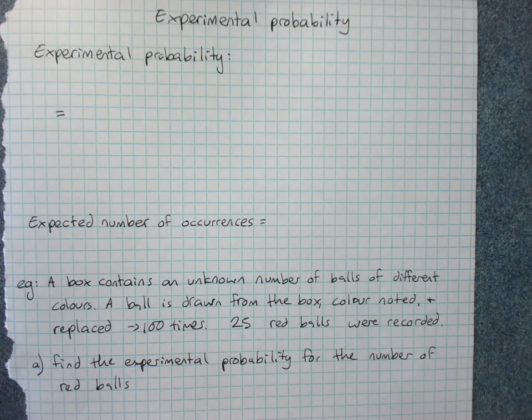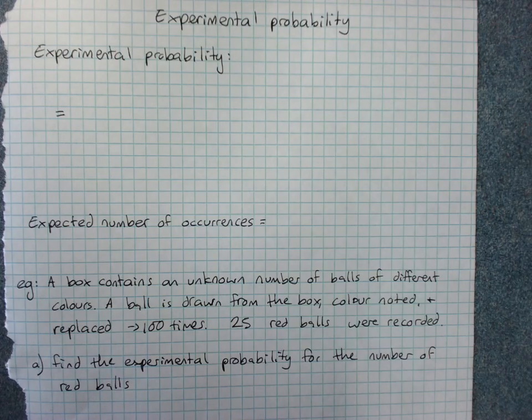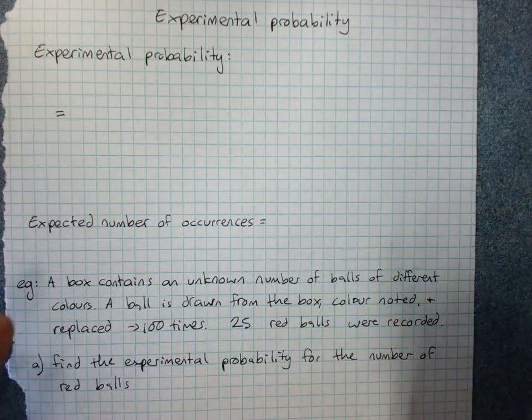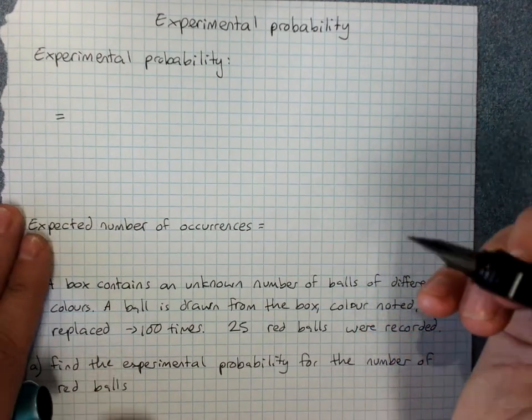If that's the case, then we'll usually do an experiment or a survey to get experimental probability that can be an estimate of the likely theoretical probability if we knew all the outcomes.